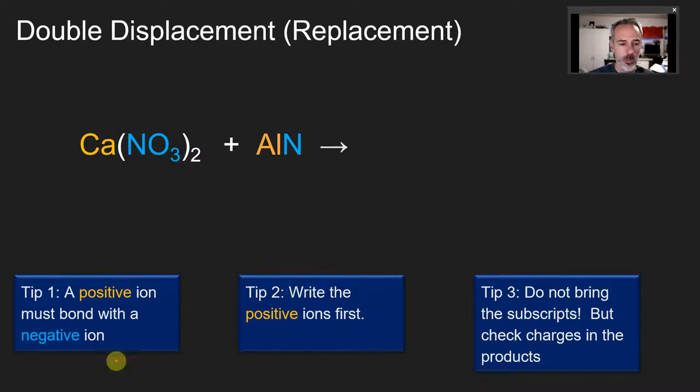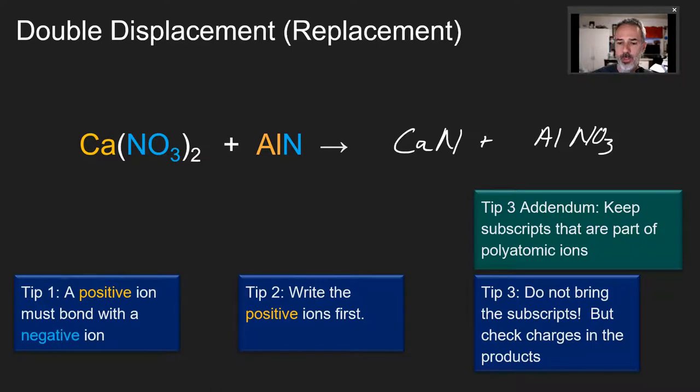So let's see if we can figure out how to swap the partners. Based on what we've done before, which two ions should we write down first? Calcium and aluminum, and we're going to spread them out by quite a bit. Calcium's new partner is going to be N, and aluminum's new partner is going to be NO₃. Remember, we're not keeping the two because that was for subscript purposes, but nitrate is NO₃, so we've got to keep that three. My addendum to tip three is: keep subscripts that are part of polyatomic ions.